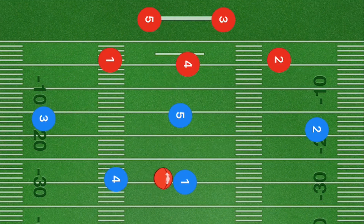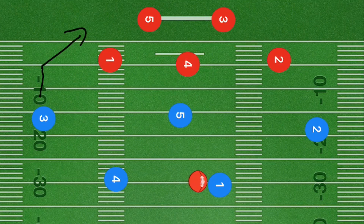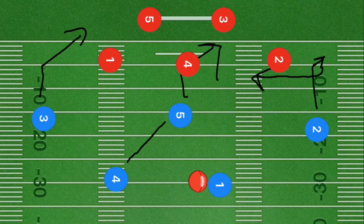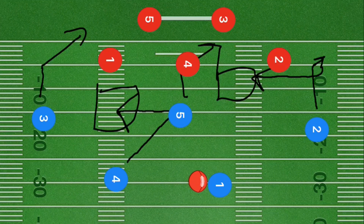This next formation is split backs. We can start player one here or out here, one or the other. Players three and five are going to run up about five yards at a 45 degree angle out towards the right side. Player two is going to go up about 10 yards, do a fake towards that side, then curl back around and cut across the field. Player four is going to run up towards where player five's original starting position was and cut out towards the left side. Our first option is player four; if he is not open, player two cutting across the field is our backup.